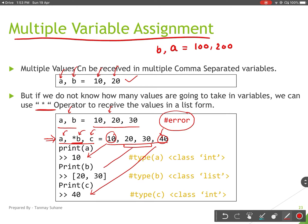You can see the data types. So here if you don't know how many values are going to come, we can use star operator and the variable.